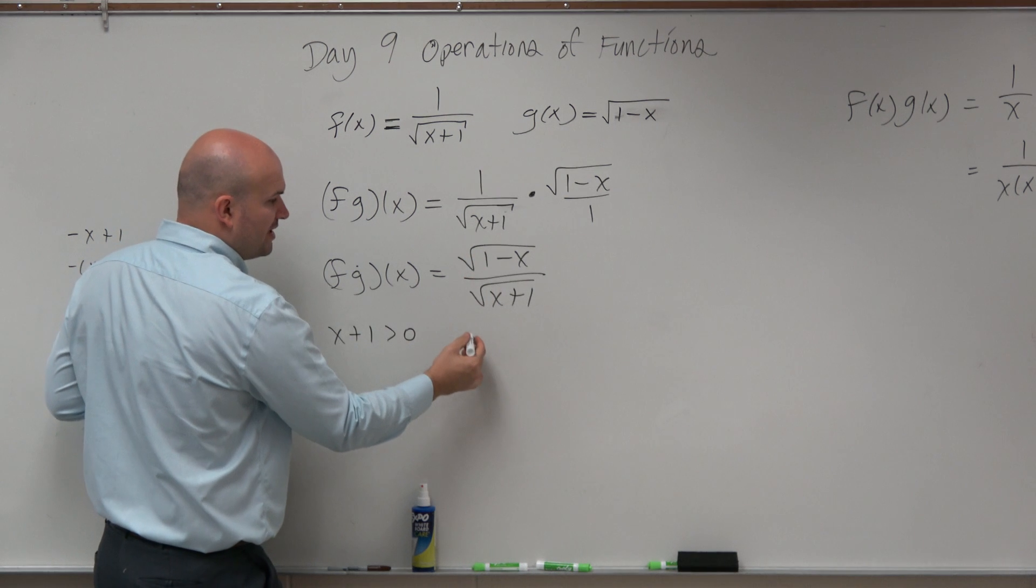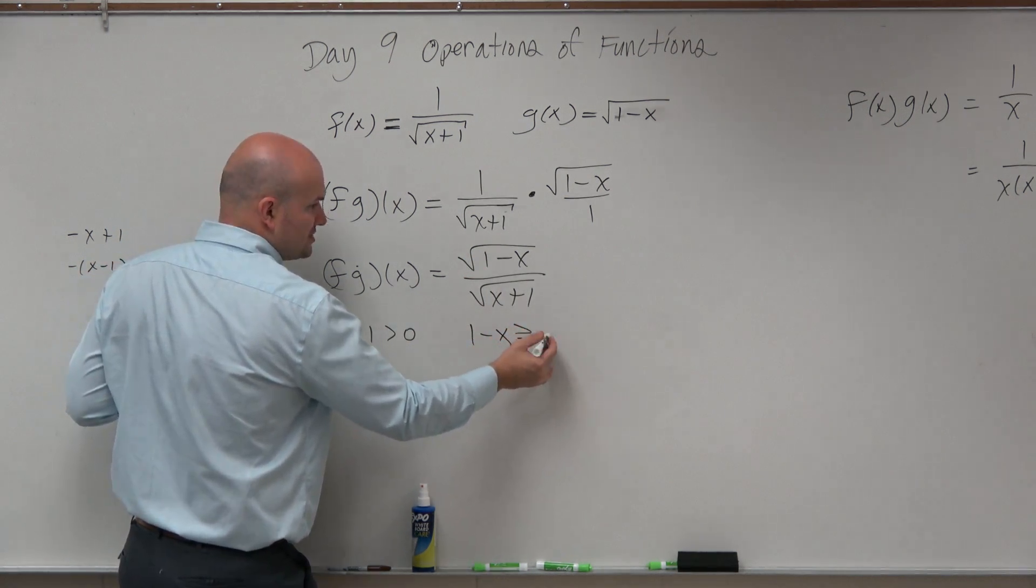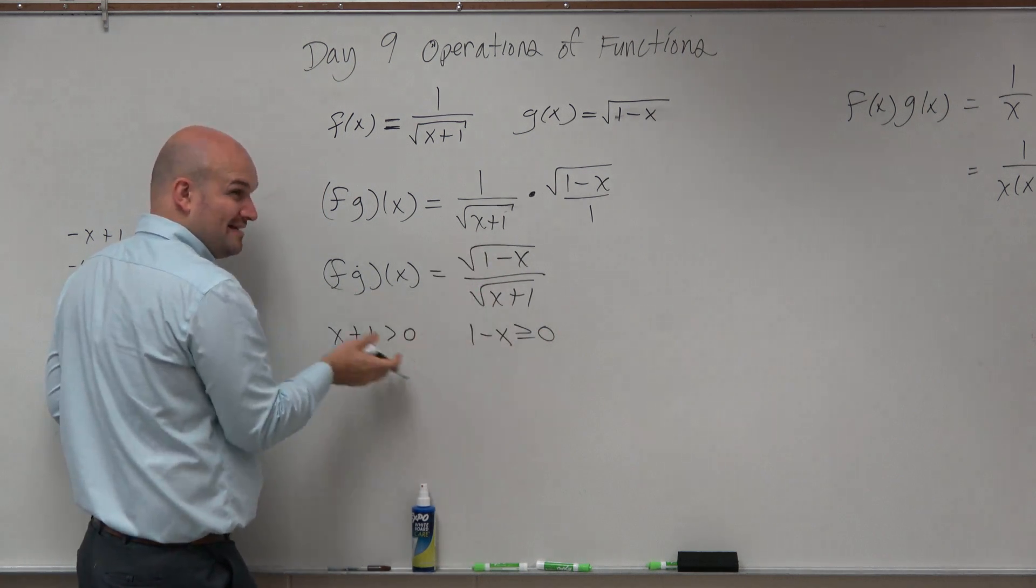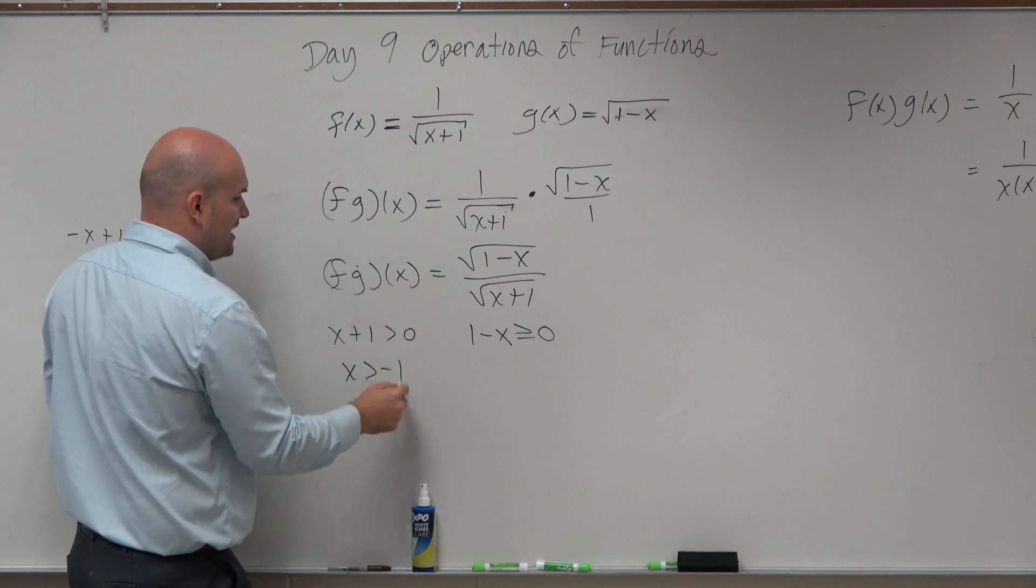Then we have 1 minus x has to be greater than or equal to 0. We have two radicals. Both of them have to be greater than 0. Here we solve: x has to be greater than negative 1.